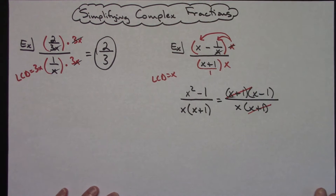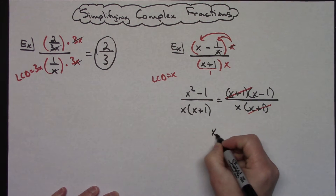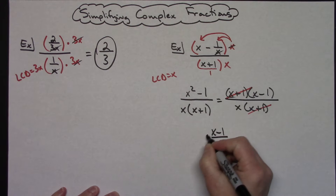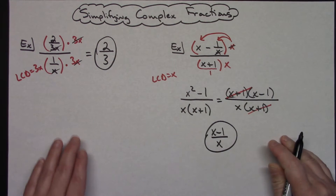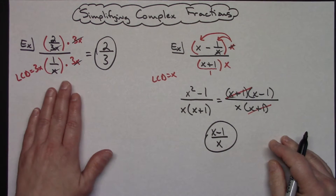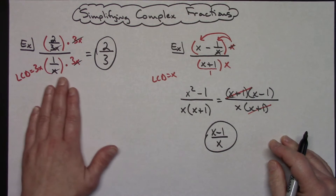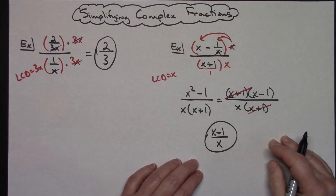That leaves me with a final answer of x minus 1 over x. So a little bit more effort than the first one. This first example would be a really easy one. This second one would be about a medium one.